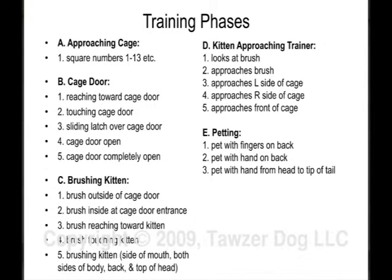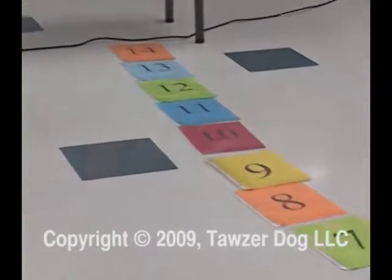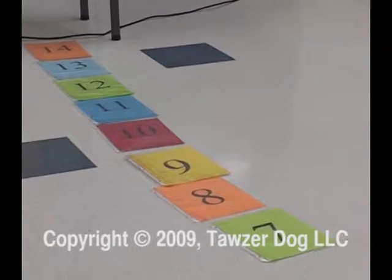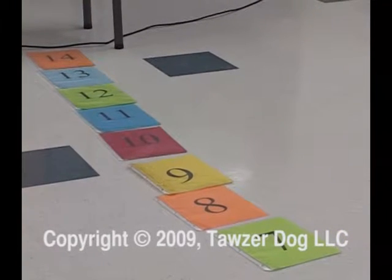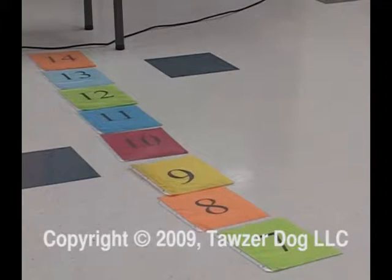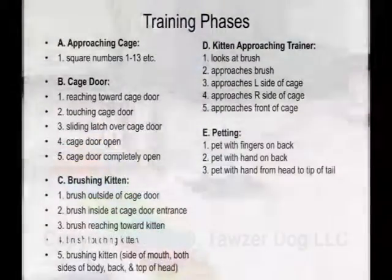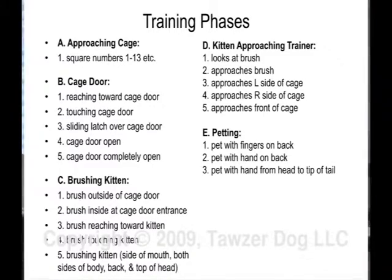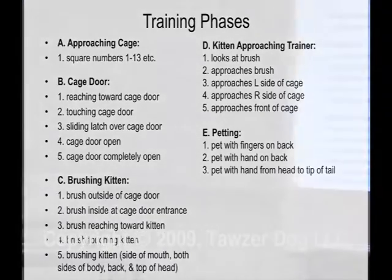So approaching the cage — I'm not just approaching and not paying attention. I actually have it broken down into squares that I have on the floor here. I use very fancy material: it just requires printing out a piece of paper and putting a number on it. My rooms always happen to be 14 squares long. You use those squares to tell where you're at.